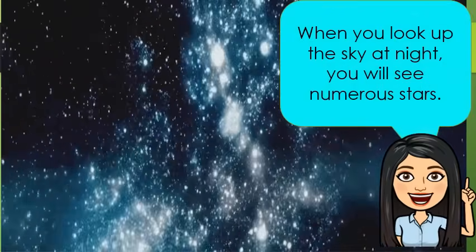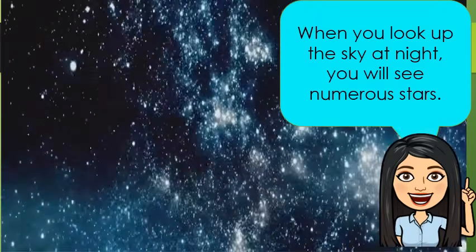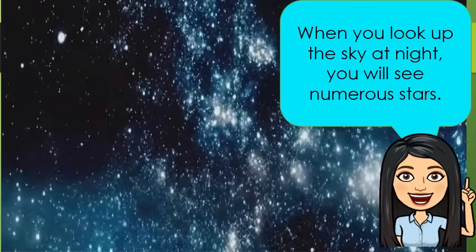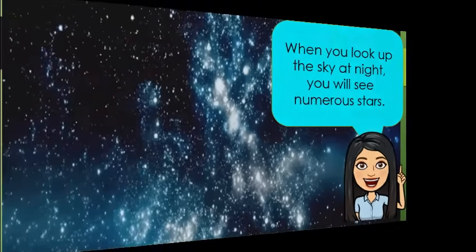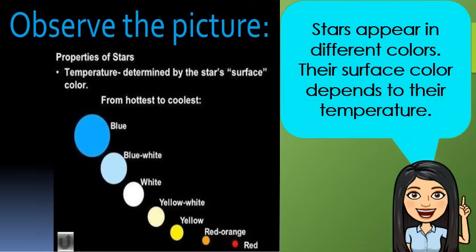When you look up in the sky at night, you will see numerous stars. They are too many. It will be difficult to count them all. Stars appear in different colors. Their surface color depends on their temperature. Blue stars are the hottest, while red ones are the coolest. Some stars are too dim to be seen with the eyes alone.